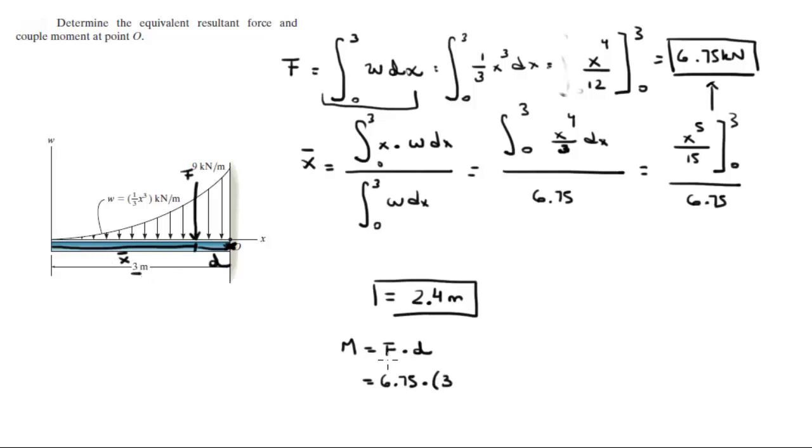Minus x bar which we found at 2.4 meters, and this is equal to 4.05 kNm going clockwise.